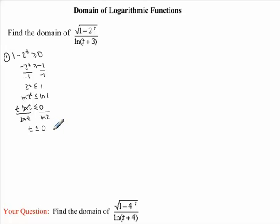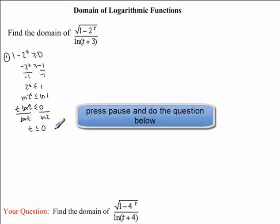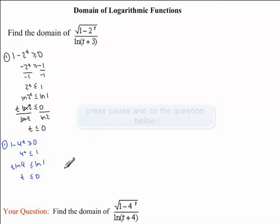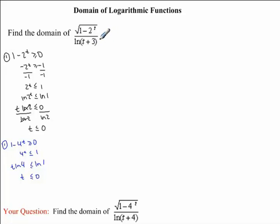I now want you to try that step in the problem you are given. Here's the answer you should have got. Going back to our question, we now need to look at our denominator. If you can remember from previous years, the denominator can never equal 0.